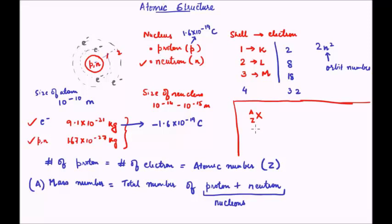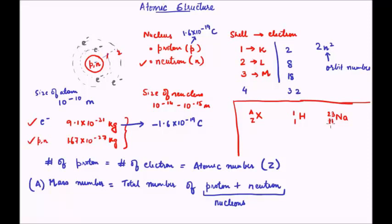Let's say the symbol of the element is X; then the atomic number Z is written below-left and the mass number A is written above-left. This represents the complete configuration of an atom. For example, take hydrogen: it has one proton so its atomic number is 1 and it has 0 neutrons, so the atomic mass is also 1. Another example is sodium, symbol Na, which has 11 protons and 23 nucleons, meaning the number of neutrons is A minus Z = 23 − 11 = 12.